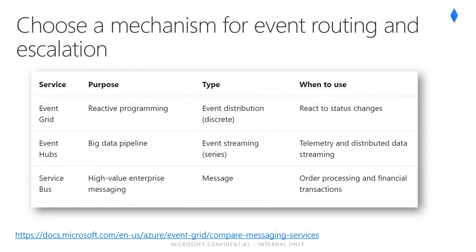Event Grid is an eventing backplane that enables event-driven reactive programming. It uses a publish-subscribe model. Publishers emit events but have no expectation about which events are handled. Subscribers decide which events they want to handle. It has the following characteristics: dynamically scalable, low-cost, serverless, and at least once delivery.